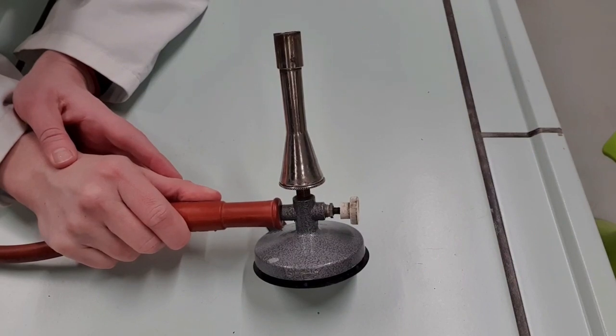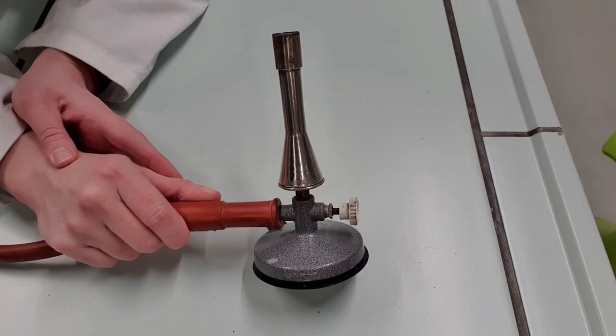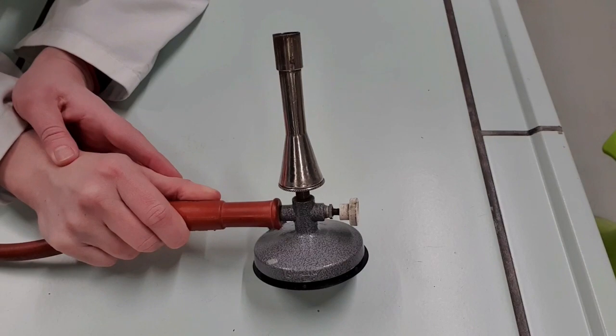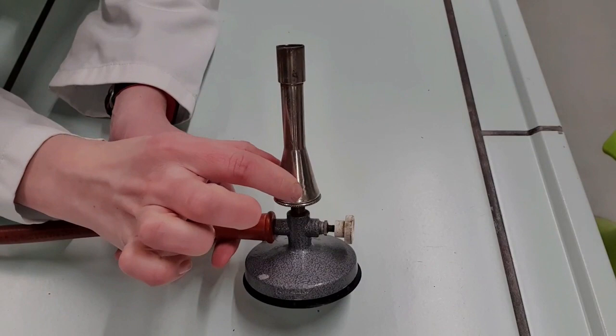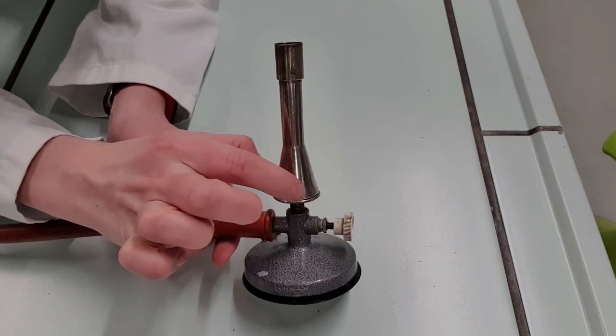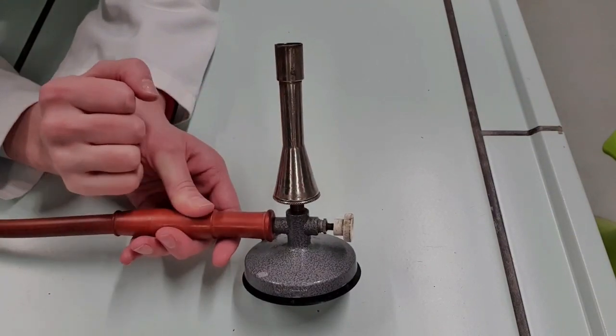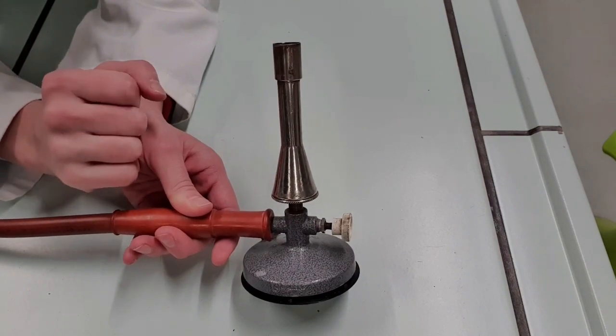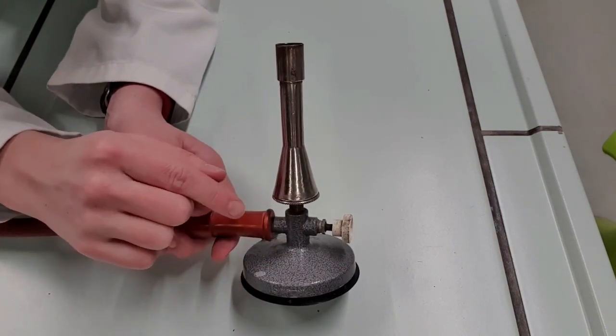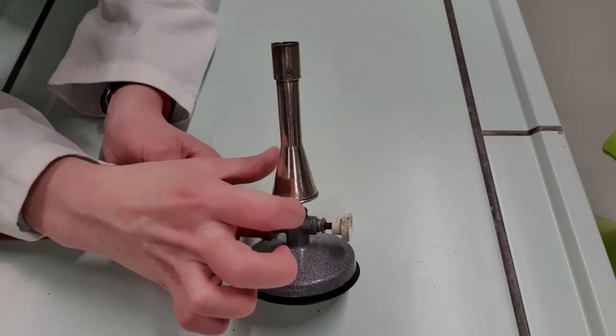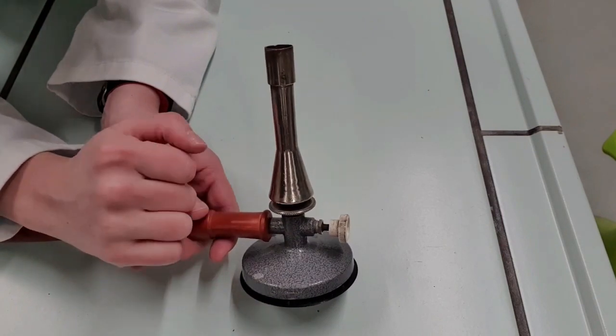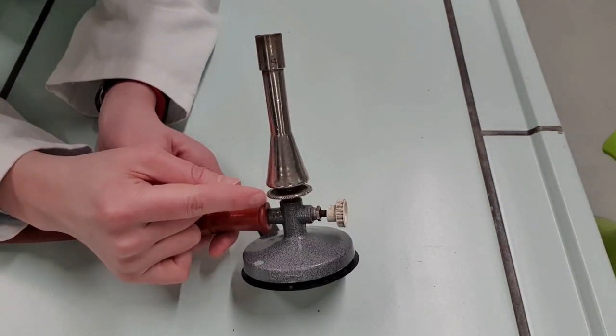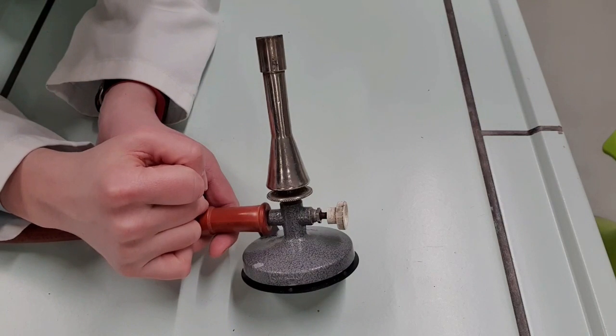Step one, check your Bunsen burner because different manufacturers make them slightly differently. You've probably seen them where there is a ring of metal here and you can move it around to open and close an air hole. But this one's a little bit different. It actually does still have an air hole. It's this washer on the bottom. And when you open the air hole it lets extra oxygen in to turn the flame from yellow, the safety flame, to blue which is the really hot flame.